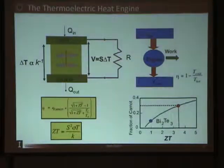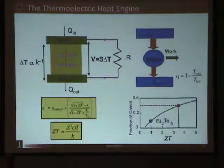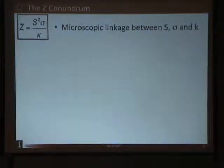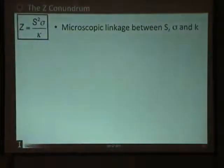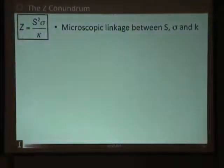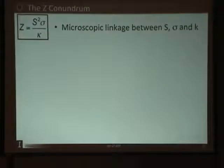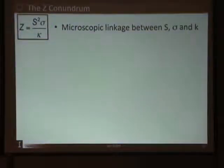The problem we grapple with is how to increase ZT from the best value of about one today at room temperature to about three. At ZT of three, thermoelectrics starts meeting and beating some of the fluid cycles that we are familiar with. Increasing Z has proven to be a very, very tough problem, because these three parameters — Seebeck coefficient, electrical conductivity, and thermal conductivity — are very intricately linked at a microscopic scale. You cannot fiddle with one without affecting the others.